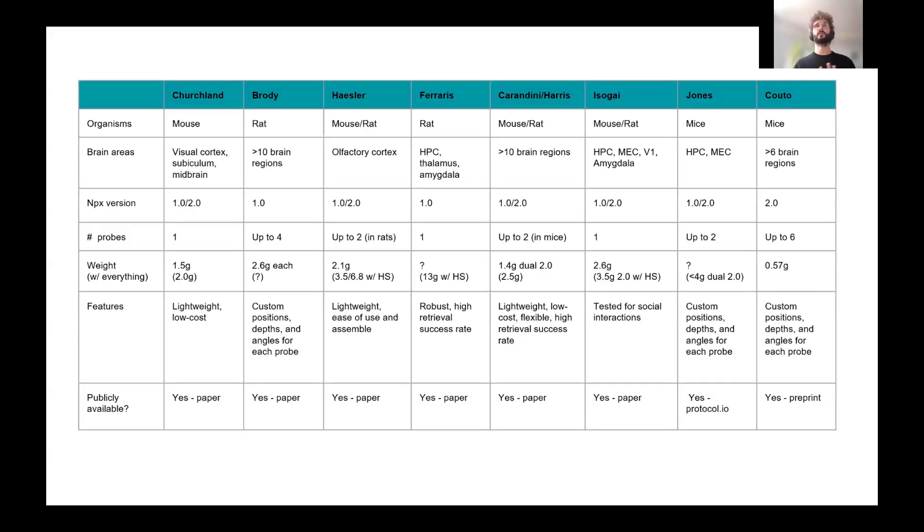To help you kind of choose, I've tried to make and reuse from the past a table like this, where you have all the different implants that I've shown just before, the different organisms in which they've been tested, so mainly rodents. This one's been tested once in ferret. The brain areas, actually most of them have been recorded in various brain areas, the Neuropixels version, and also the number of probes that you can insert. And so, you know, in the first ones, especially in mouse, it was one or two probes, but now some implants that I'm going to tell you can implant up to six probes. Then the weight, it's very hard to quantify because in each paper it's described differently. Some people tell you about the weight with cement or without. And then some features. I won't spend too much time on it because it's a lot of details, but feel free to go back to it. The slides will be available.